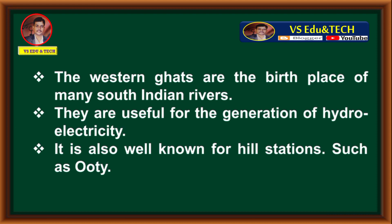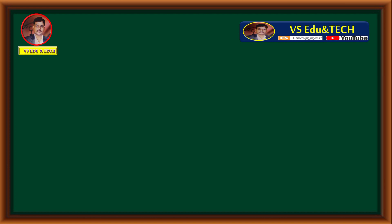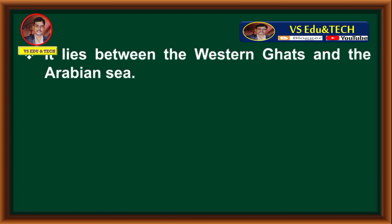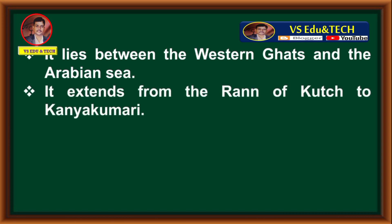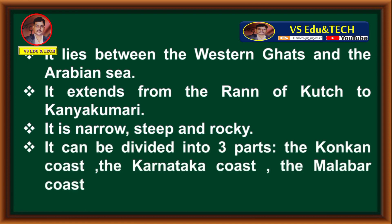Question 6: Write briefly about the western coastal plain. It lies between the Western Ghats and the Arabian Sea. It extends from the Rann of Kutch to Kanyakumari. It is narrow, steep, and rocky. It can be divided into three parts: the Konkan coast, the Karnataka coast, and the Malabar coast.